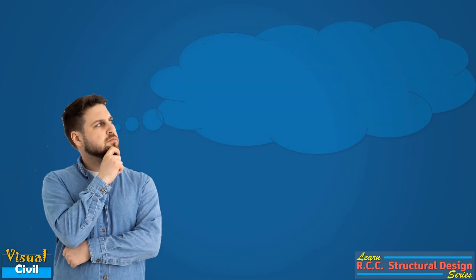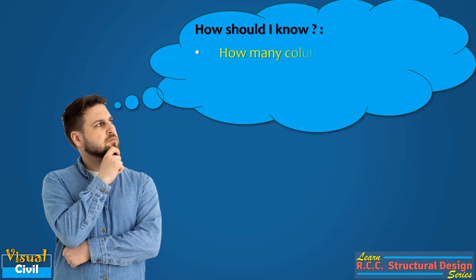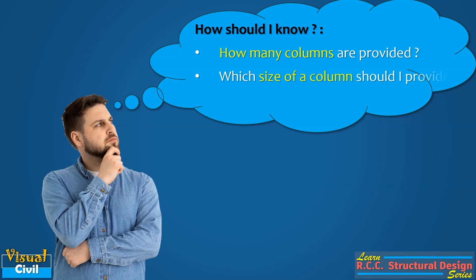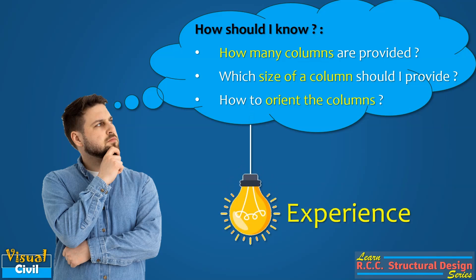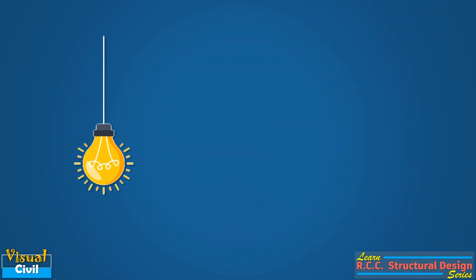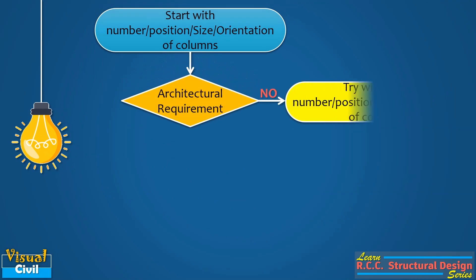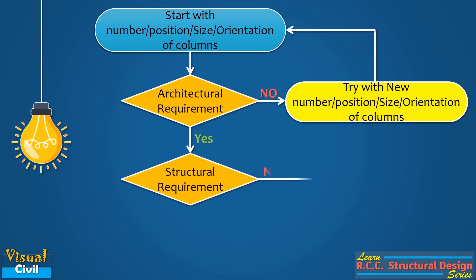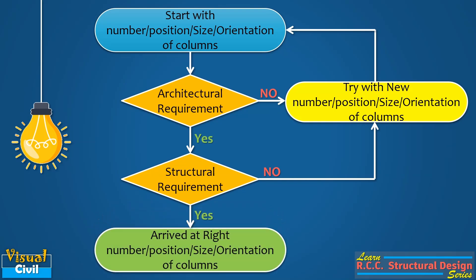Finally, if we want to answer the questions — how many columns should be provided, which size of column should be used, or how to orient them — experience is the only tool which can answer these questions. The number of columns and their sizes are always somewhat arbitrary. The guidelines available online or offline for the number of columns, their sizes, and orientation are based on the experience of individuals. Whatever the number of columns, their sizes and orientation, they must satisfy two requirements: first, architectural requirements, and second, structural requirements as shown in the flowchart. One has to iterate many times to reach the right number, position, size, and orientation. An experienced engineer will require fewer iterations compared to a beginner.